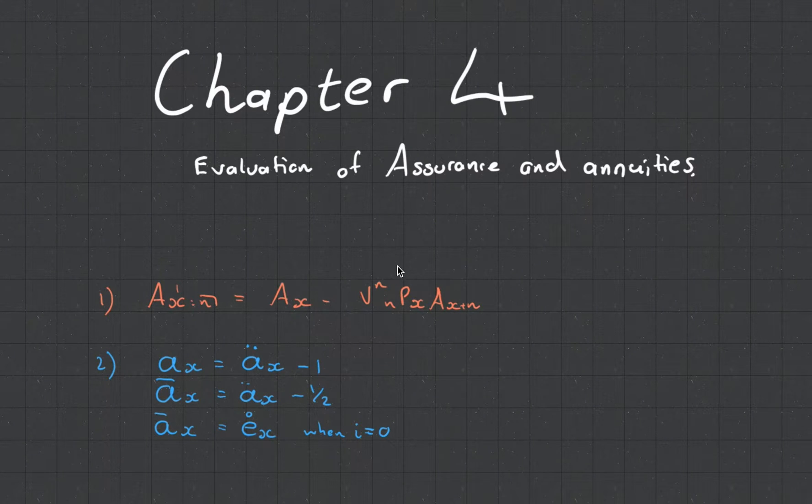Hey guys, it's MJ, the student actuary, and today we're going to be talking about chapter four for subject CT5. This one is called Evaluation of Assurance and Annuities, and this is just a little summary of what we're going to be looking into, but let's get into it in more depth.